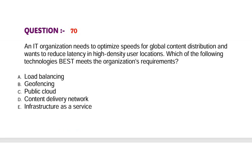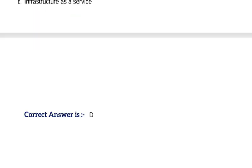Question: An IT organization needs to optimize speeds for global content distribution and wants to reduce latency in high-density user locations. Which of the following technologies best meets the organization's requirements? Option A, Load Balancing. Option B, Geofencing. Option C, Public Cloud. Option D, Content Delivery Network. Option E, Infrastructure as a Service. Correct answer is Option D.